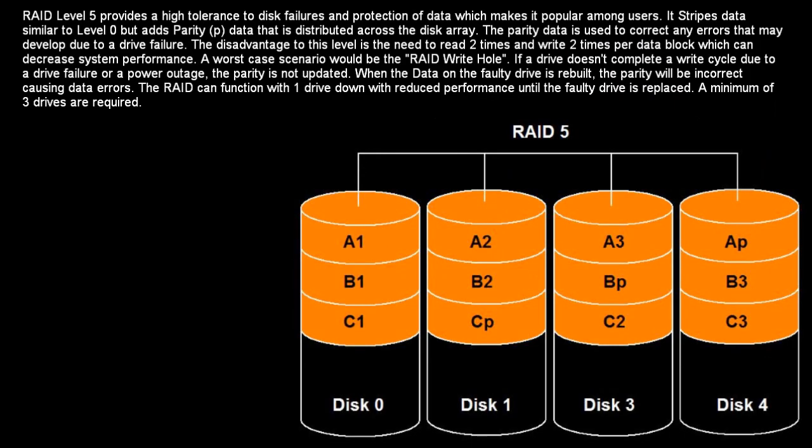RAID level 5 provides high tolerance to disk failures and protection of data, which makes it popular among users. It stripes data similar to level 0, but adds parity — data that is distributed across the disk array. The parity data is used to correct any errors that may develop due to a drive failure. The disadvantage is the need to read 2 times and write 2 times per data block, which can decrease system performance. A worst case scenario is the RAID write hole: if a drive doesn't complete a write cycle due to a drive failure or power outage, the parity is not updated. When the data on the faulty drive is rebuilt, the parity will be incorrect, causing data errors. The RAID can function with one drive down at reduced performance until the faulty drive is replaced. A minimum of three drives are required.